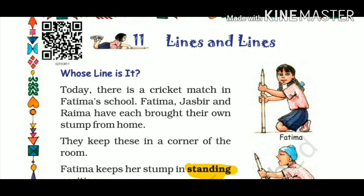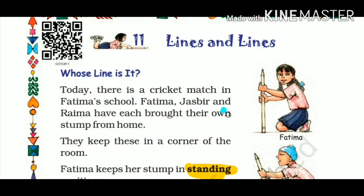Chapter 11 is called 'Whose Line Is It?' The first activity is: today there is a cricket match in Fatima's school. Fatima, Jasbir, and Raima have each brought their own stump from home. These are called stumps — the ones used in cricket play.